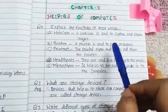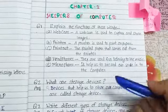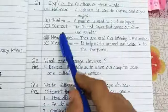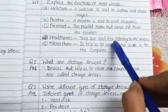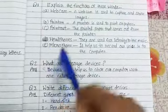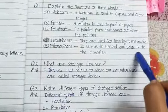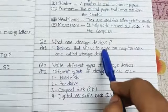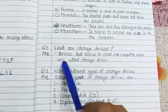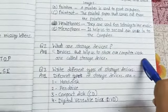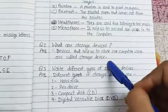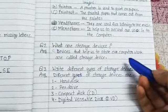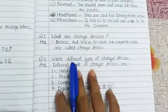Headphones are used for listening to the music. Microphone helps us to record our voice into the computer. Second is: what are storage devices? Devices that help us to store our computer work are called storage devices. Third is write different types of storage devices.